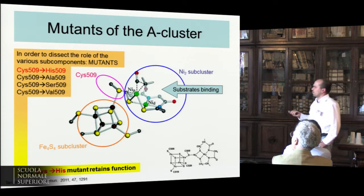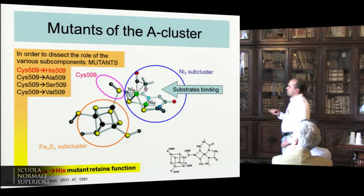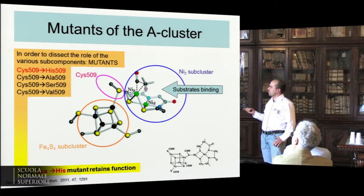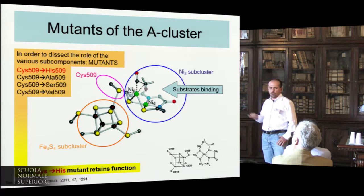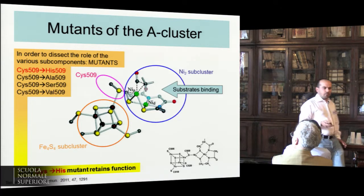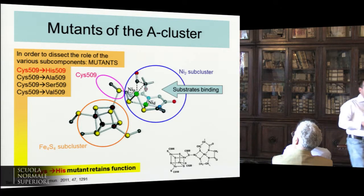It's quite surprising, because for example the mutation towards serine would just exchange the sulfur with an oxygen, but this kills completely the activity of the enzyme.